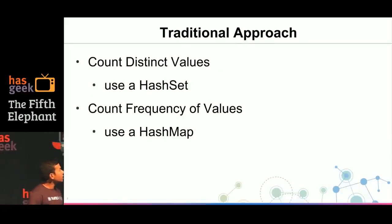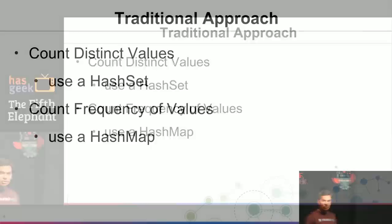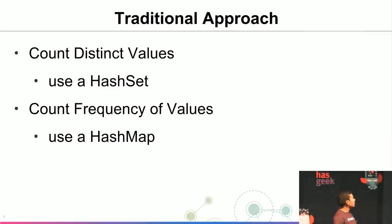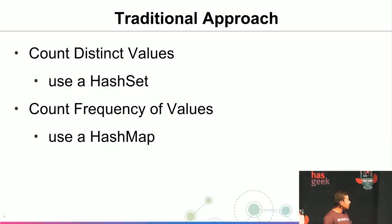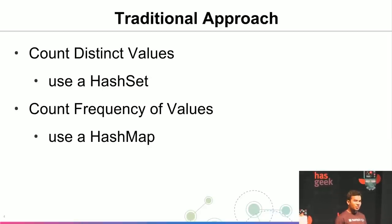What are the traditional approaches to solving these two problems? It's very easy. To count distinct values, you use a hash set — for each incoming element, you insert it into the hash set, and when the query comes, you return the size. Similarly, for counting the frequency of each distinct value, you use a hash map containing values and their counters, incrementing them as elements arrive.